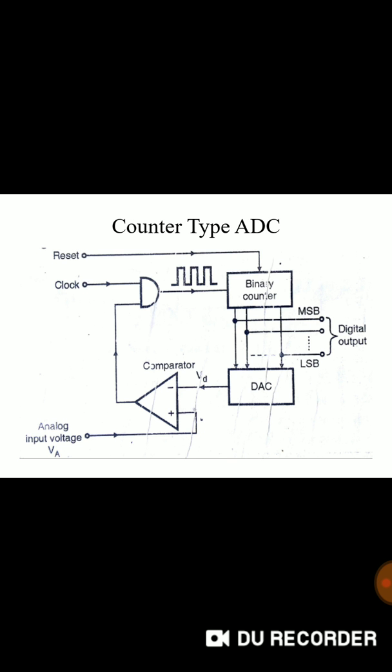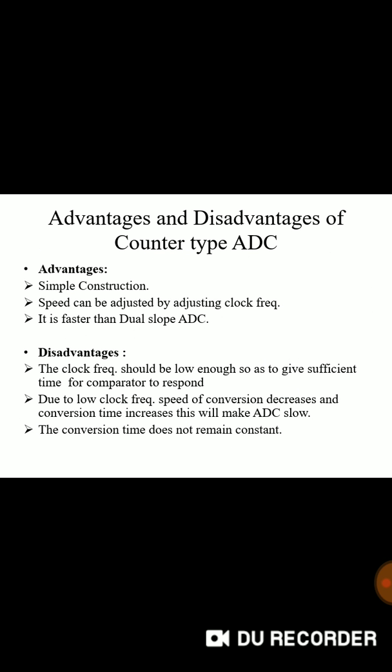Counter type ADC. A clock is used. Binary counter is given. Comparator is there. DAC output is given to inverting terminal. Non-inverting terminal is your analog input voltage. These are its advantages and disadvantages. Construction wise it is simple. Speed can be adjusted using clock frequency faster than dual slope ADC.